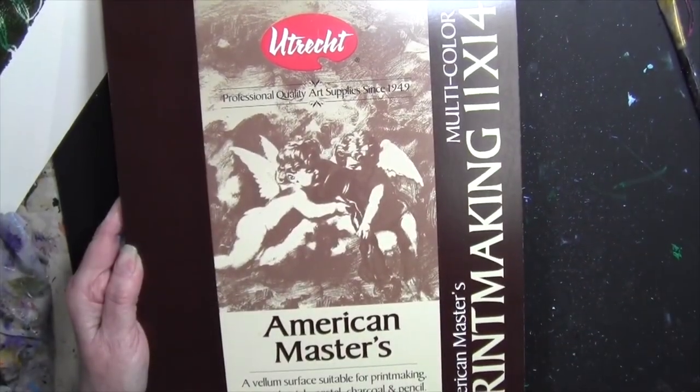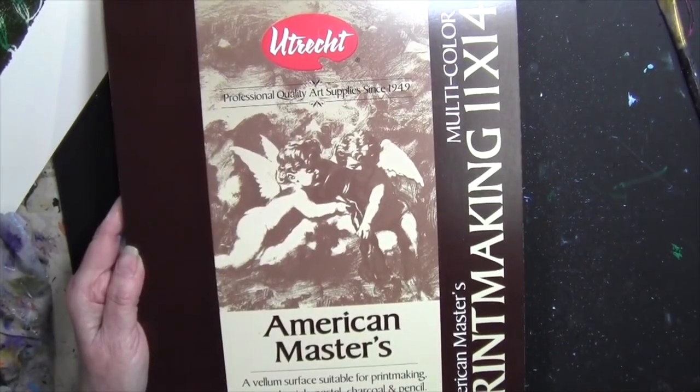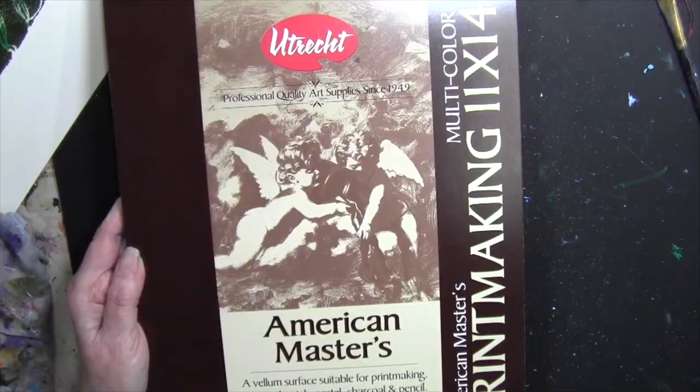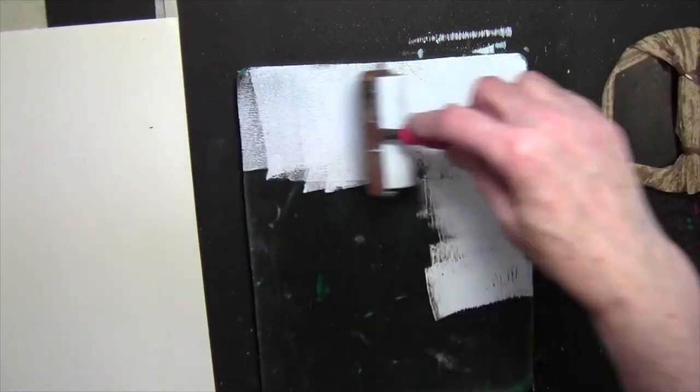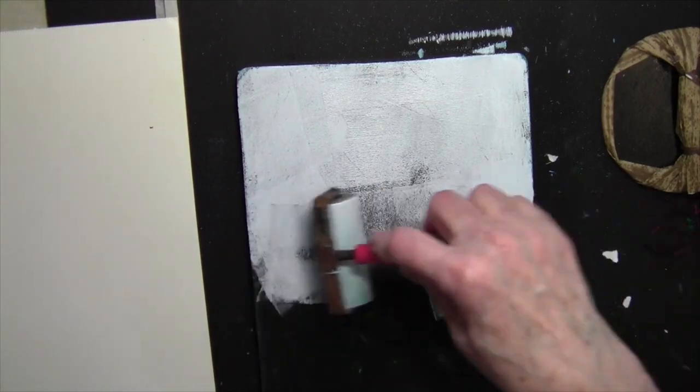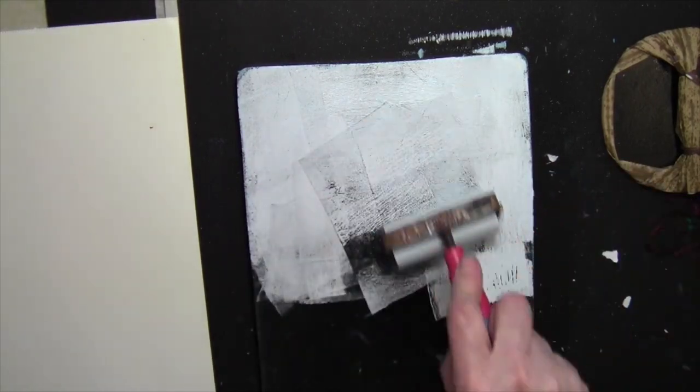So the paper I'm working on for this print is this American Masters printmaking paper, which is made and marketed by Utrecht. As I'm putting this on, I'm concerned mostly about the top of the plate for coverage, because the bottom will be covered up with the mountains.